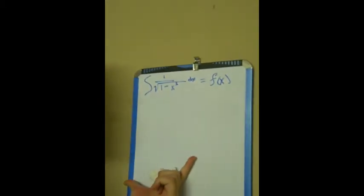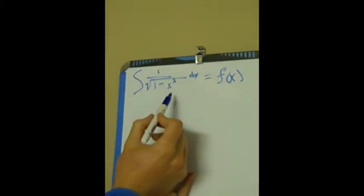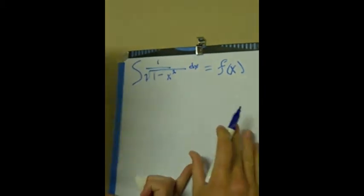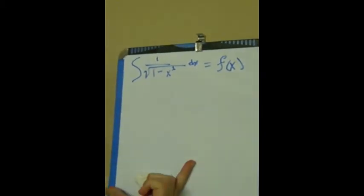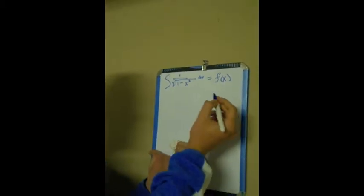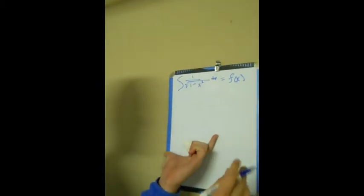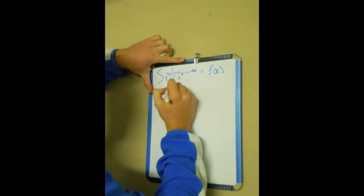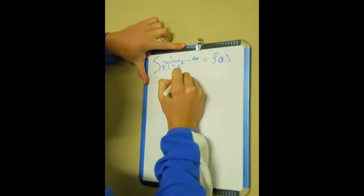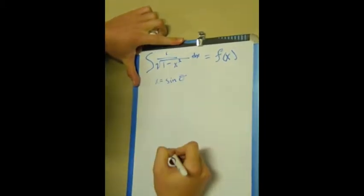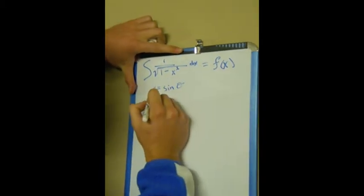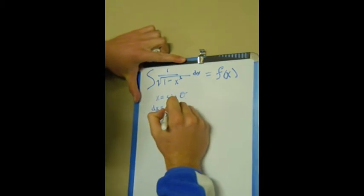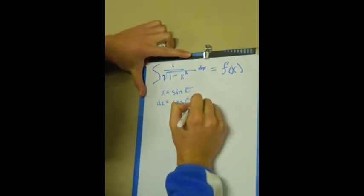We're going to use trig substitution. Notice that this function is defined between negative one and one, because we can't have zero in the denominator. So we're going to use sine, defined between negative pi over two and pi over two. So we're going to let x equal the sine of theta.